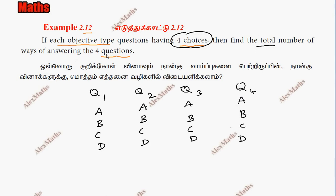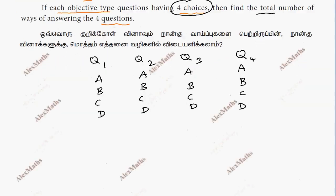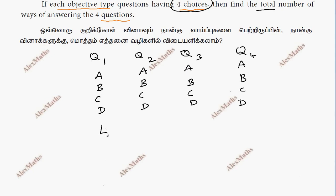Find the total number of ways of answering 4 questions. If question 1 is answered, we have 4 ways of answering — suppose option A is chosen, then it is 1 way; or option B, or option C. So 4 options means 4 ways of answering. Question 2 also has 4 ways, and similarly each question has 4 ways.